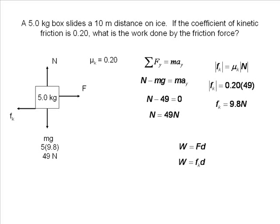The box moves a distance of 10 meters. We plug in both of our variables and find the work done by friction on the box. Our answer is negative because friction is in the opposite direction of the displacement.